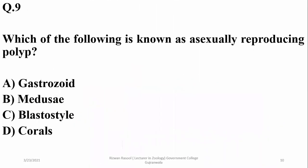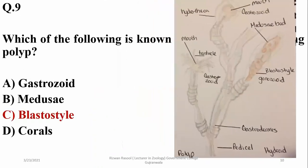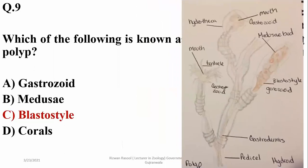Question eight: the asexually reproducing polyp in cnidarians is the blastostyle or gonozoid, which is the asexually reproducing structure. The gastrozoid is known as the feeding polyp.